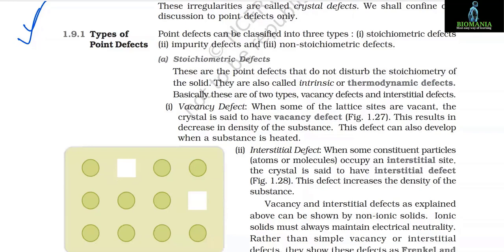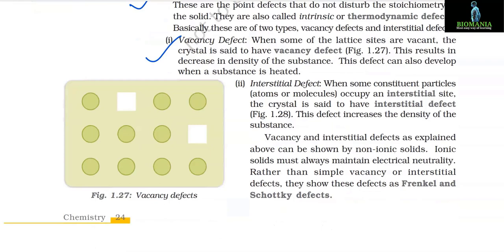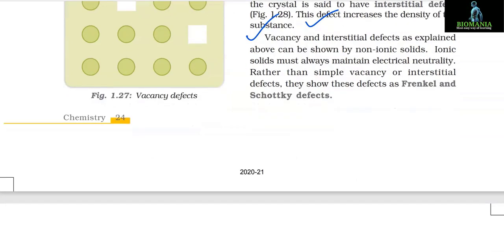1.9.1 Types of Point Defects. Point defects are classified into three types: (1) stoichiometric defects, (2) impurity defects, and (3) non-stoichiometric defects. (a) Stoichiometric defects — point defects that do not disturb the stoichiometry of the solid; also called intrinsic or thermodynamic defects. They are of two types: vacancy defects (some lattice sites are vacant, decreasing density) and interstitial defects (some particles occupy interstitial sites, increasing density).